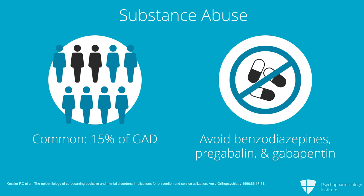Gabapentin probably has comparable abuse potential to pregabalin — they are very similar compounds structurally, in how they work, where they work, and in their indications. Gabapentin somehow avoided being labeled Schedule IV, but many reports suggest there is misuse going on. We'll discuss more about the evidence base on gabapentin and pregabalin for GAD later.